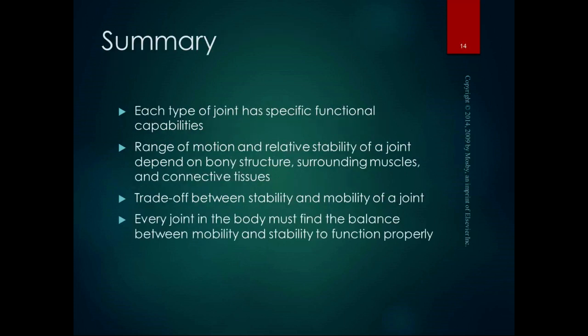Each type of joint has specific functional capabilities. The range of motion and relative stability of a joint depend on the bony structure, the surrounding muscles, and the connective tissues. There is always a trade-off between stability and mobility — the shoulder is a very mobile joint but not a very stable one, while joints with less mobility have more stability. Every joint in the body has to find the balance between mobility and stability. In PT, we're working on both mobility and stability to optimize function — that's our job.